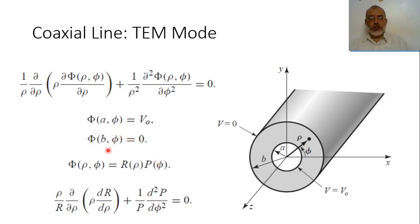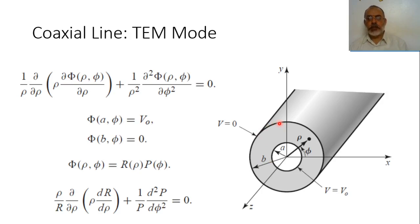The boundary conditions of our problem are: the potential at the outer conductor is assumed to be zero, while the potential at the inner conductor is assumed to be V₀. It should be noted that the potential is independent of φ, because the outer surface is an equipotential surface and the inner surface is another equipotential surface. Thus, at every point along either surface the potential is the same, meaning the potential is constant with respect to φ.